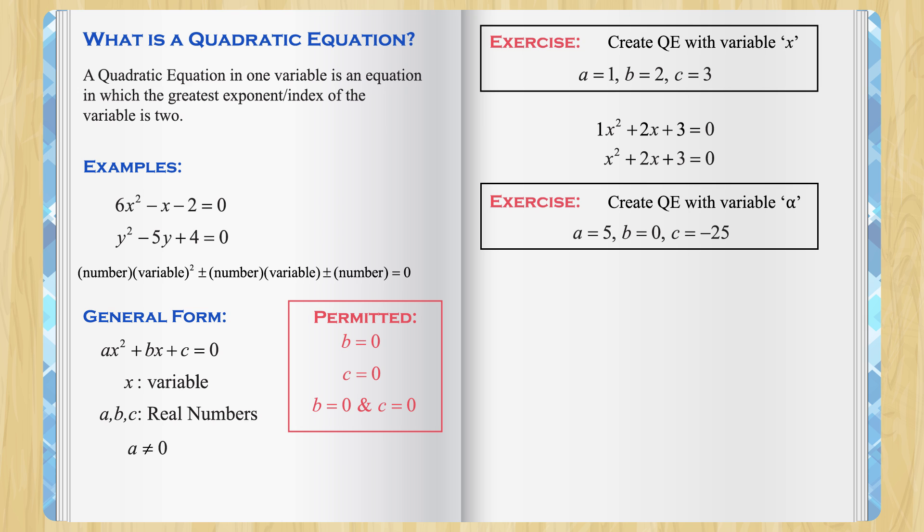Also, here, b is equal to 0 but that is alright. Now, let's bring the general form. So, the variable is supposed to be alpha. Let's switch that.